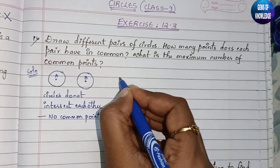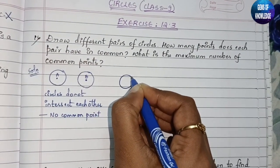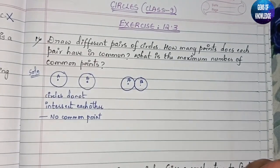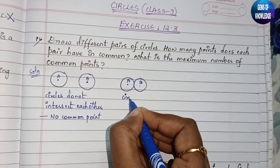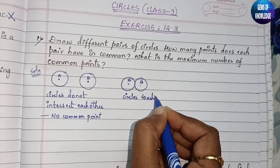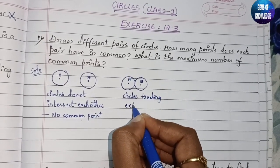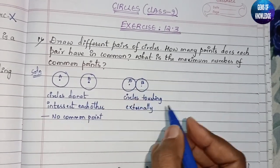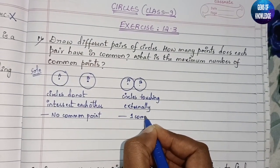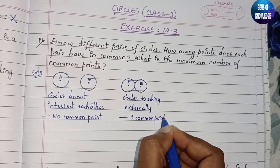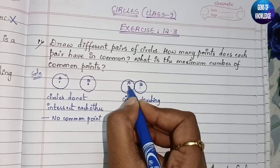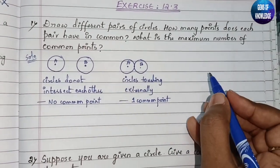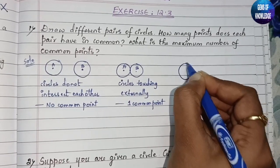In the second pair, we bring the circles a bit closer. This is circle A and this is B. You can see these two circles are touching each other at an external point. So here there is one common point — the point where the two circles touch externally.